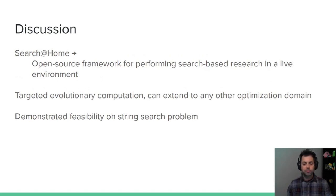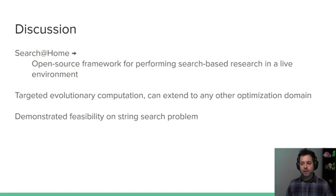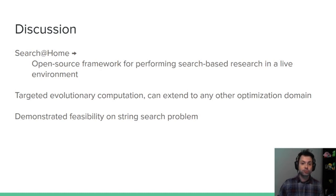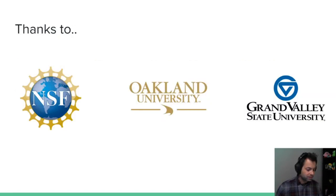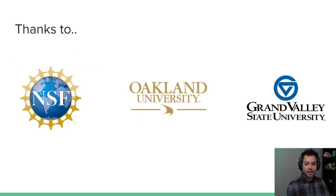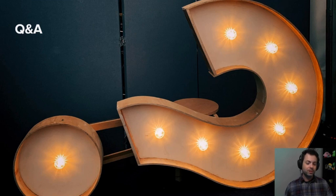To conclude, Search at Home is our open-source framework for performing this research. We targeted evolutionary computation, but you can run any search algorithm that can run on one of these devices — the Pis run Linux, so you can basically run any language you want. Feasibility is demonstrated on a string search problem, and this is an initial step in this path of research. I'd like to thank our sponsors: the NSF, Oakland University, and Grand Valley State University. Thank you all for listening.